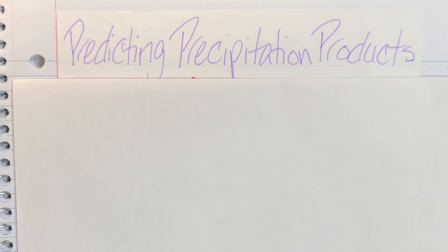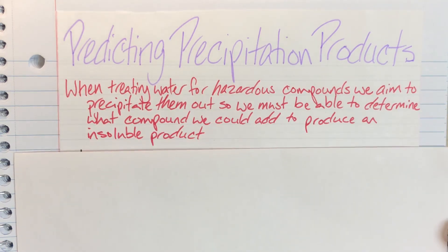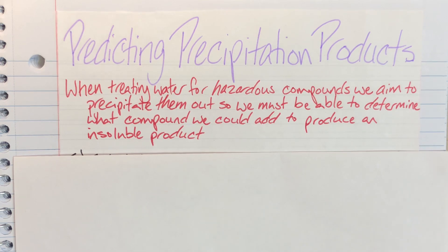Today we will be discussing predicting precipitation products. In the real world, when we are treating our drinking water for hazardous compounds, we generally aim to precipitate those hazardous compounds out so that we're able to actually filter out what needs to be filtered out so that everything is safe to drink.